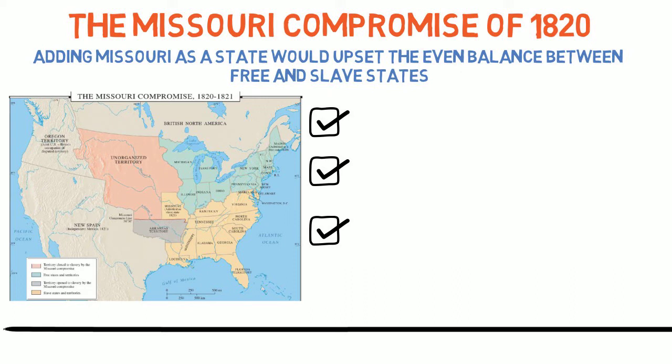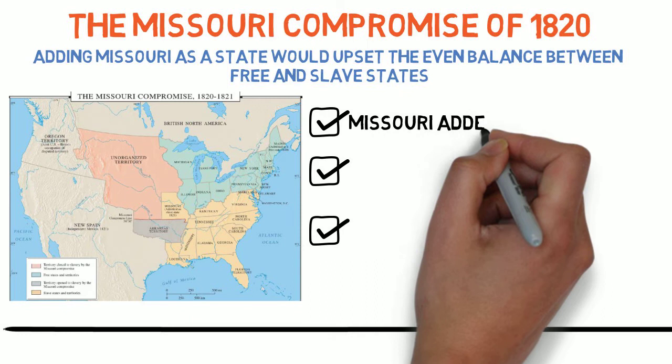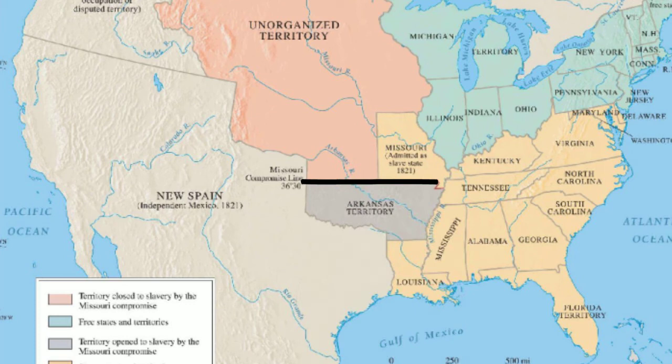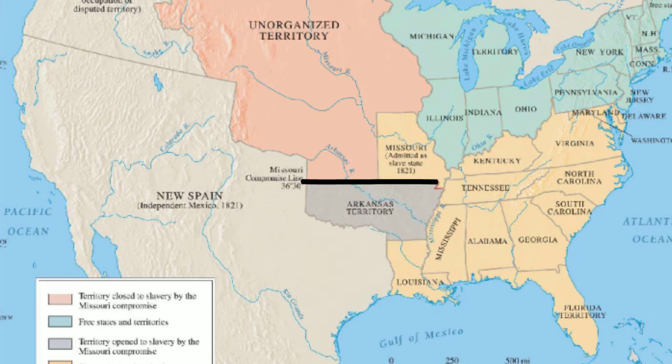Northern states opposed Missouri being added as a slave state, and Southern states opposed it being added as a free state. To resolve the issue, Representative Henry Clay from Kentucky proposed what became known as the Missouri Compromise. The Compromise added Missouri as a slave state, but to maintain the even balance, Maine — which at that time was part of the state of Massachusetts — was created as a free state. Lastly, it was agreed that no more slave states would be added north of the 36 degree 30 line of latitude, with the exception of Missouri.